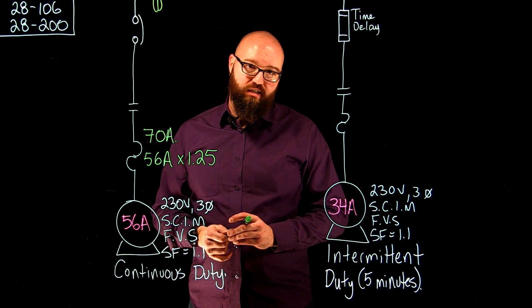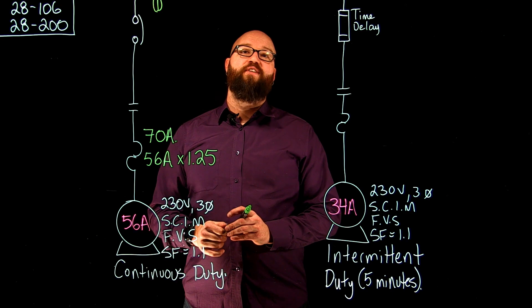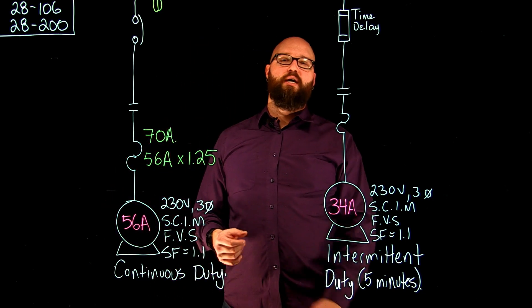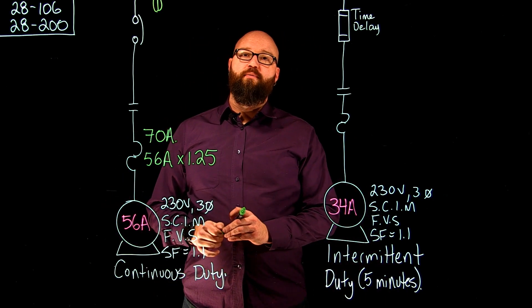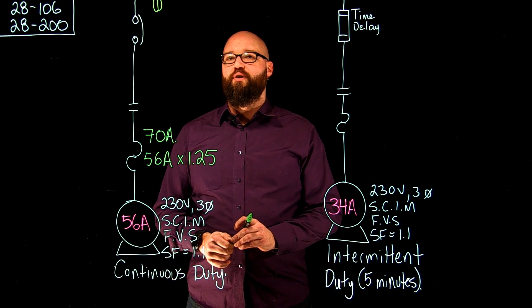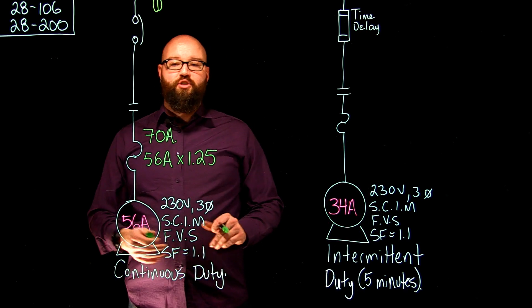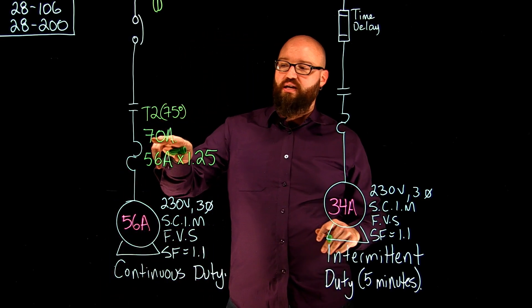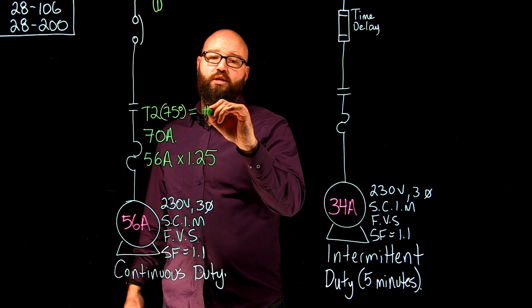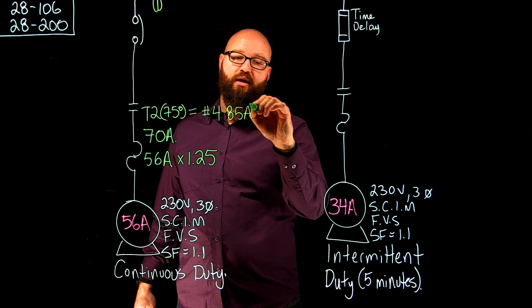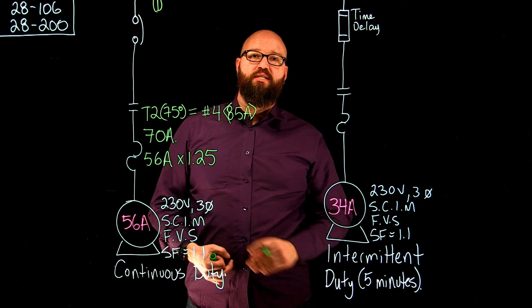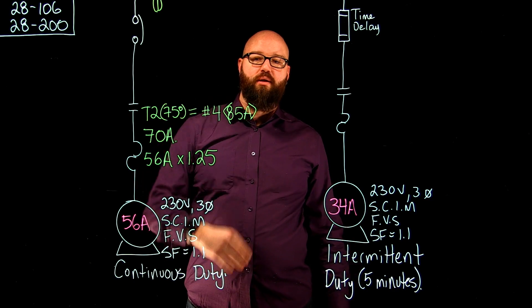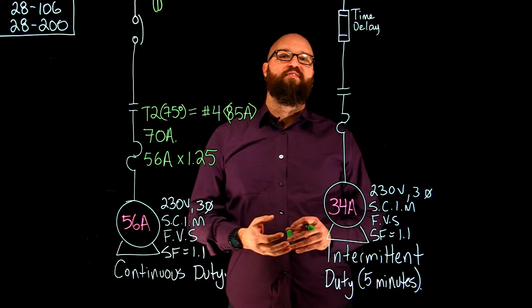So 28-104 actually tells us that for our motor calculation purposes, we're going to use the 75 degree column in table two, unless we're dealing with a class A type insulation. I'm not going to worry about the insulation types in this particular example, but we know from 28-104 we're going to use the 75 degree column when we're sizing the ampacity of our conductor. So we're going to go table two in the 75 degree column, and based off this 70 amp minimum ampacity, we're going to choose a number four, which has an 85 amp ampacity. I know that 70 amps is the absolute minimum that I can be with my conductor size, so we go up to the next available size, which is a number four.